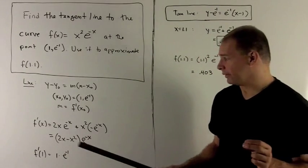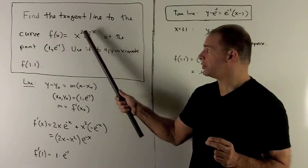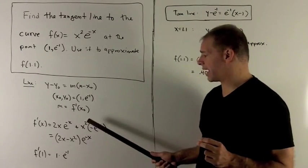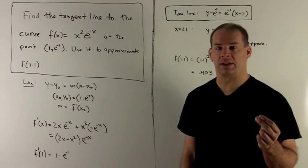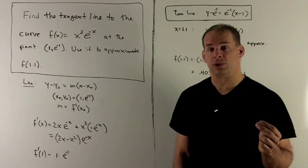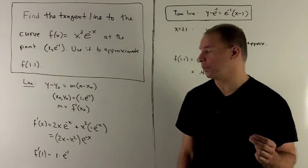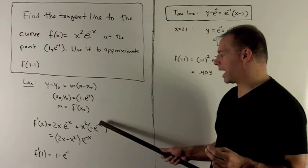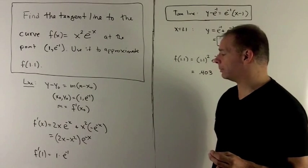We take the derivative of f. That's going to give me, using the product rule, 2xe^(-x) plus x² times the derivative of e^(-x). Think of this as e^u. Derivative of e^u just returns e^u, and then we multiply by the derivative of u. So that's going to give me e^(-x) multiplied by the derivative of the top, that gives me a -1.